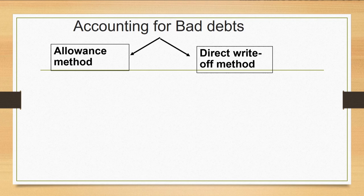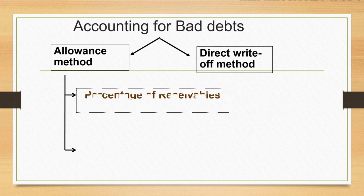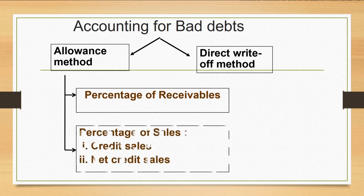Under the allowance method, there are two ways to record for bad debts: number one, percentage of receivables, and number two, percentage of sales. We will discuss these in more detail in the next video.